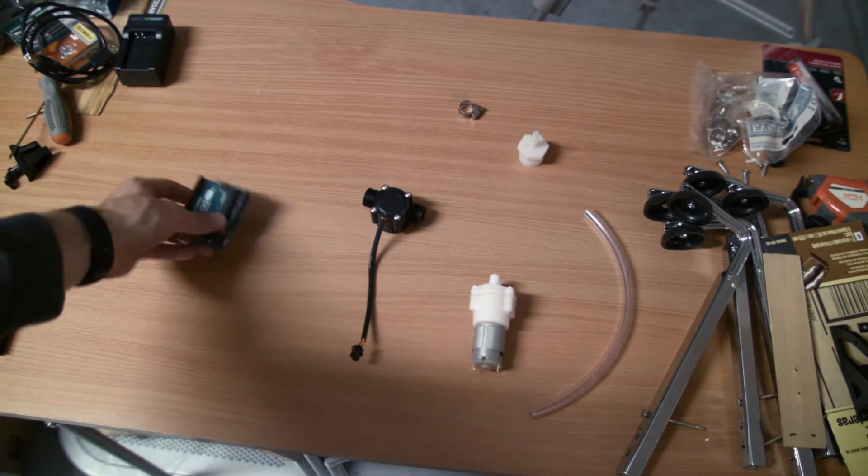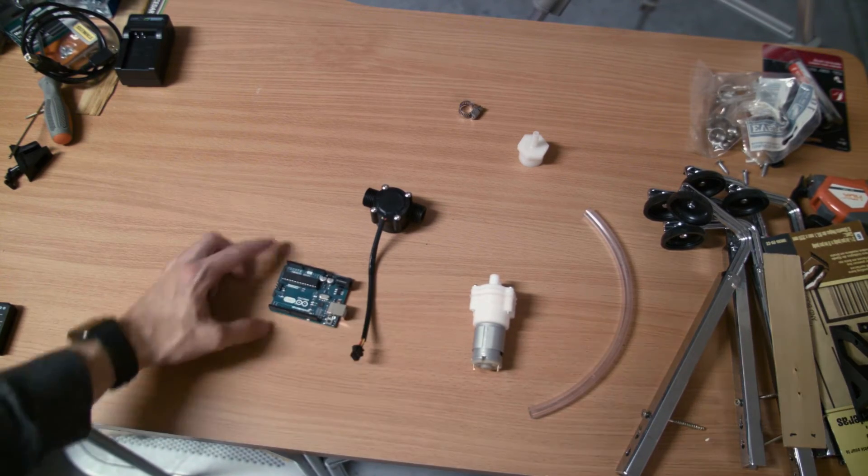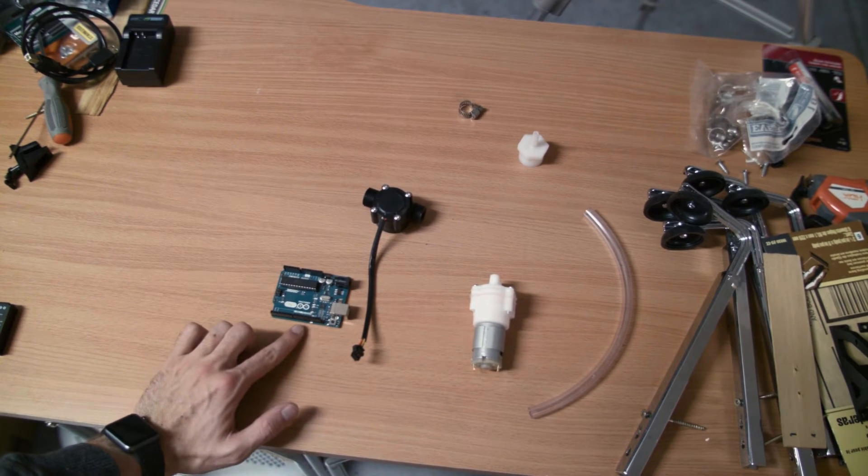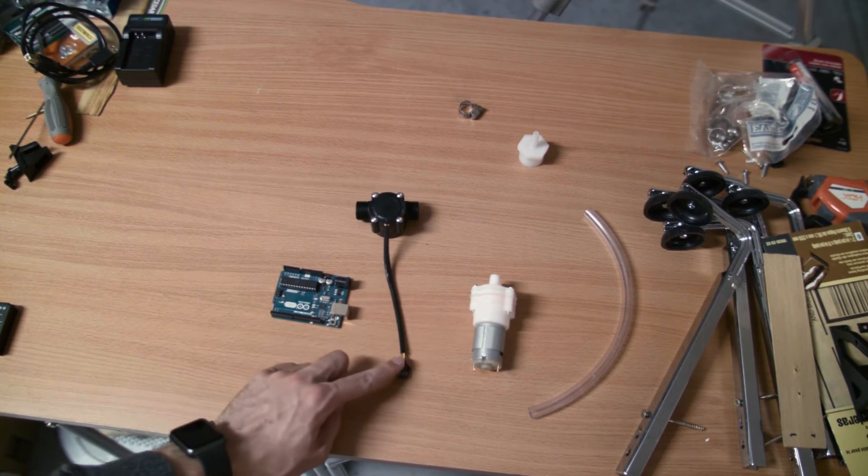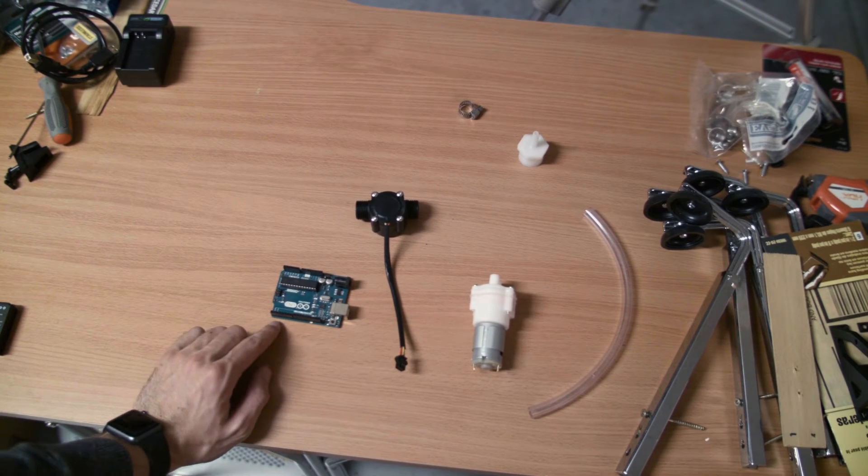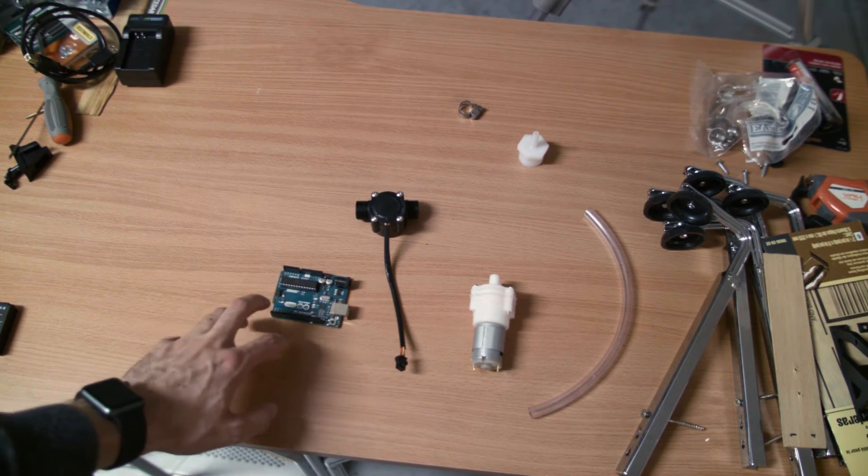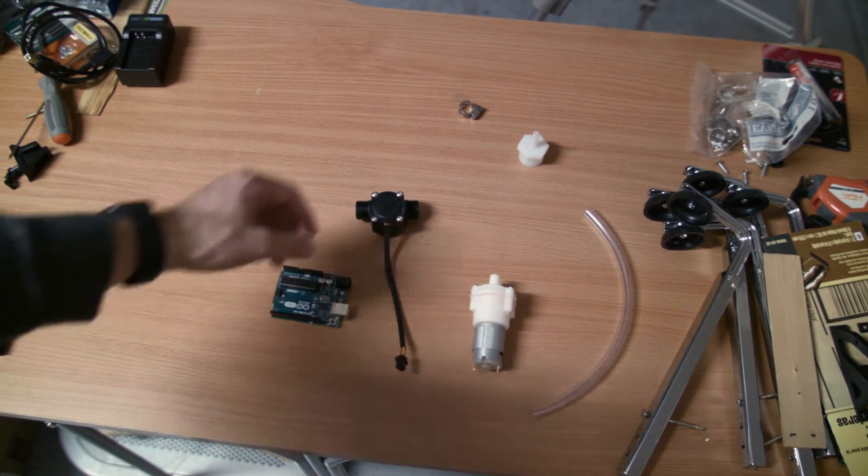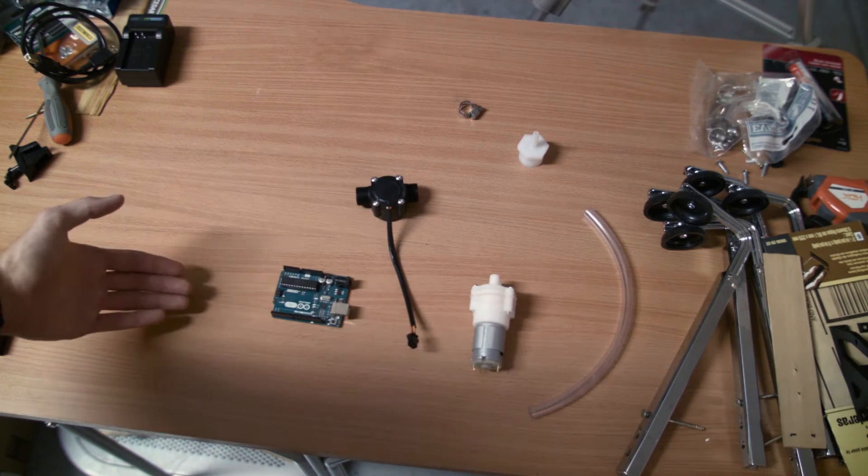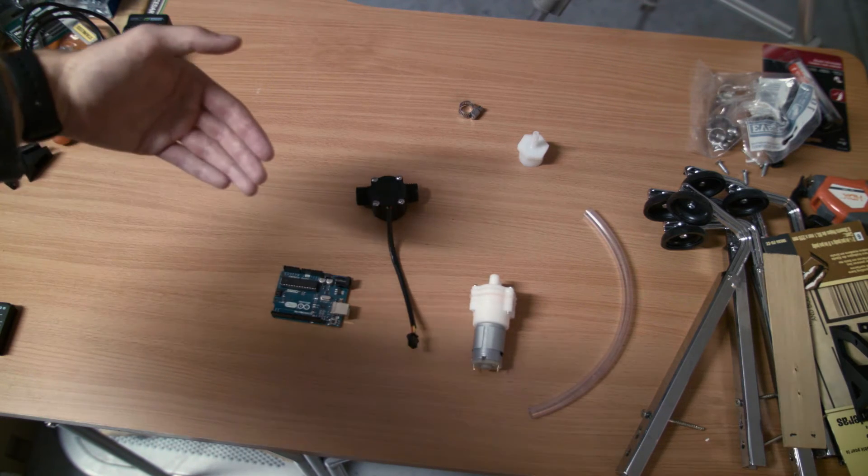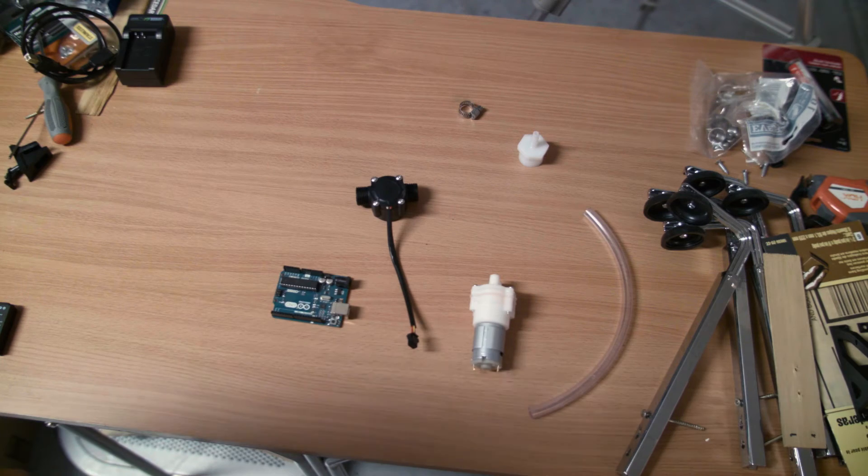I have my Arduino here with several digital I/O pins. I can hook up this yellow pin to one of these digital I/O pins and write a program that basically listens for all of these pulses through an interrupt, and then through that we can figure out how much volume has been output.